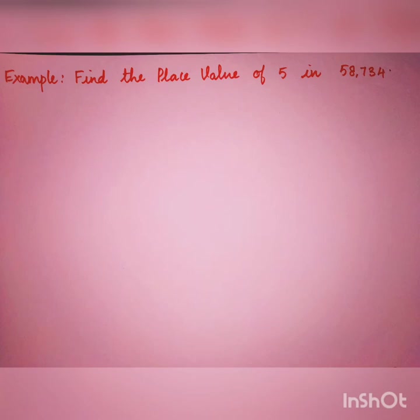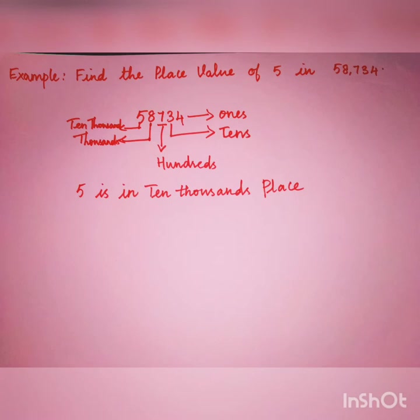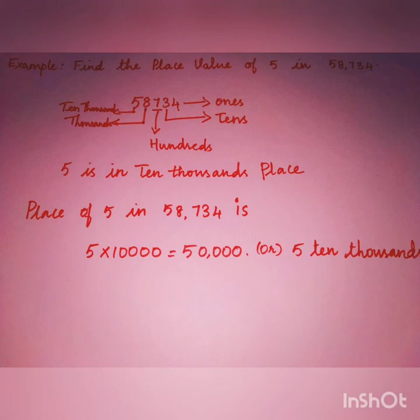Let's see another example for place value. Find the place value of 5 in 58734. First, we should know the position of 5 in 58734. According to the place value chart, 5 is located in 10,000 place. As we know 5 is located in 10,000 place, we multiply 5 by 10,000. We get 50,000. So the place value of 5 in 58734 is 50,000.